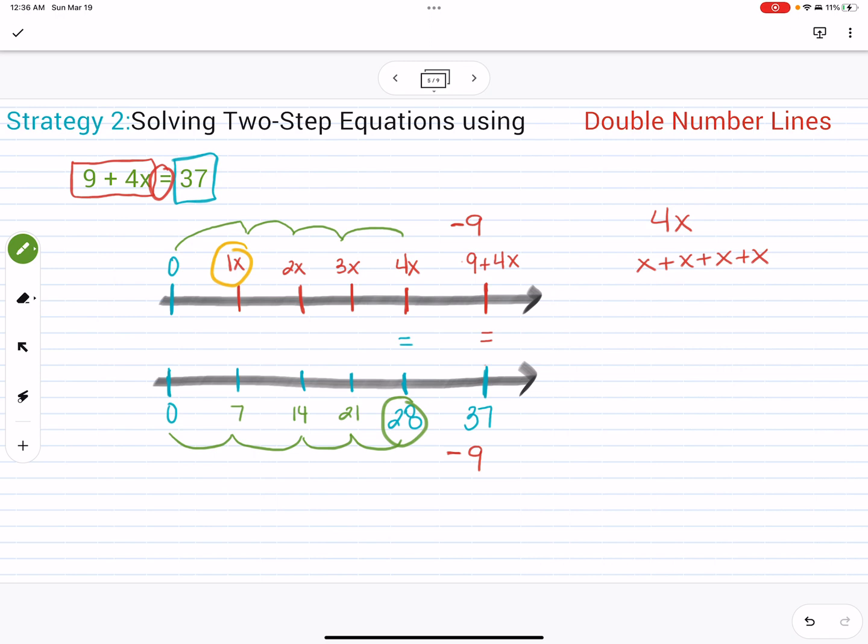Now I know that one X is equal to seven, two X is equal to 14, three X is equal to 21, and four X is equal to 28. And nine plus four X is equal to 37. That's how you use a double number line to solve two-step equations.